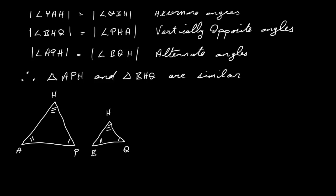We want AH over, which is this one here, over BH, which is this one here. And that's going to be equal to AP over BQ. So that's AP over BQ. So these are the sides that we want.